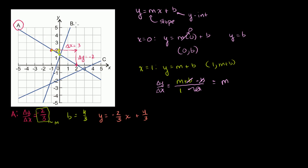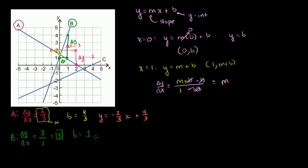Let's do equation B — hopefully with fewer fractions. Let's figure out its slope first. When our delta x is equal to 1, our delta y is 3 — we go up by 3. So delta y over delta x equals 3, meaning the slope is equal to 3. And the y-intercept: when x is equal to 0, y is equal to 1, so b is equal to 1. The equation is y is equal to 3x plus 1.